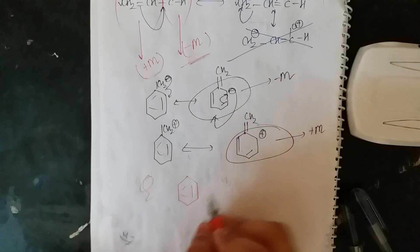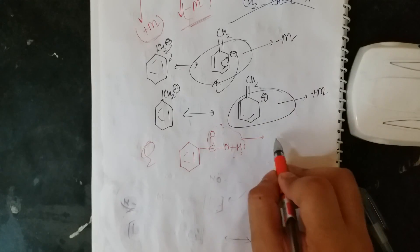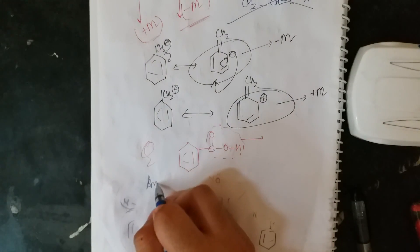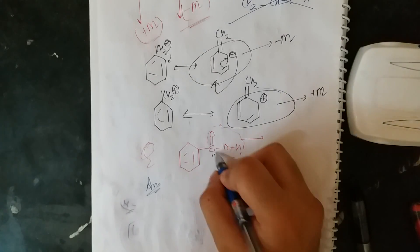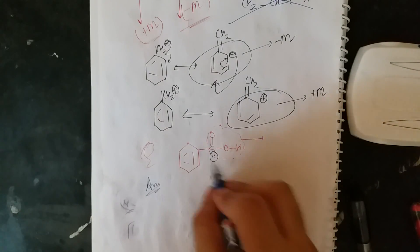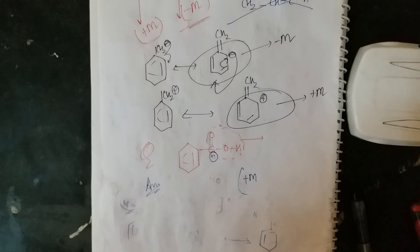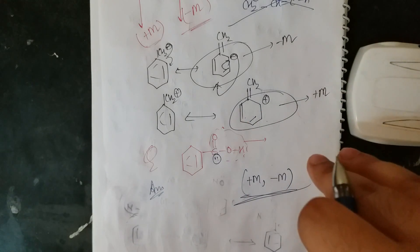A very interesting question: benzene with an SO₂H group attached. What effect does this group show — plus M or minus M? Using my two points: sulfur has a lone pair, so it can show plus M effect. But sulfur is a third-period element and has 3d vacant orbitals, so it can also show minus M effect. As a homework exercise, draw the resonance structures and you will see that sulfur can gain both positive and negative charge.